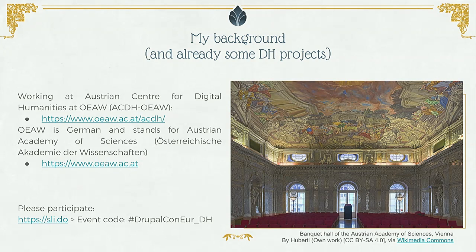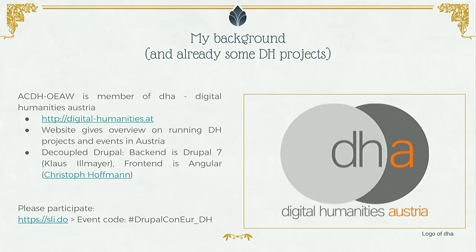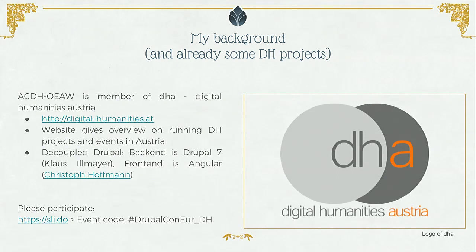We operate mainly on the level of academic research. In general, digital humanities refers to academic projects, but that's not always the case. Together with other Austrian digital humanities institutions, we run the website Digital Humanities AT, where you can find more information on events and projects. By the way, this website is a decoupled Drupal 7, and we are currently switching to Drupal 8.